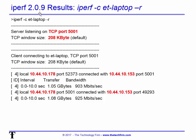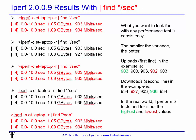With iPerf 2.09, I'm running iPerf dash c with the server name and dash r for reverse. By default the output shows port 5001, the window size, local IP, remote IP, and then the actual numbers — upload then download. I run five tests, drop the high, drop the low, and I'm left with three results that I average out. You can do as many tests as you like.